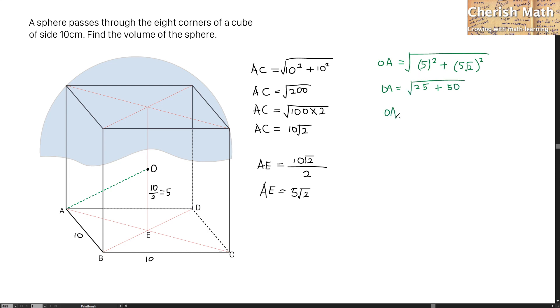And OA is going to be 25 plus 50. I got OA as 25 plus 50 is 75. 75 is a result of 25 multiplied by 3. And when I simplify it, I get 5 root 3.